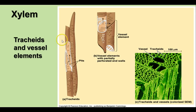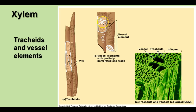Xylem is made of two main kinds of cells: tracheids and vessel elements. Tracheids are spindle-shaped and have pits in the side that allow water to move through them. Vessel elements have partially perforated end walls. Both of these kinds of cells are no longer living — they're just empty cells, empty of cytoplasm, with only the cell walls remaining.